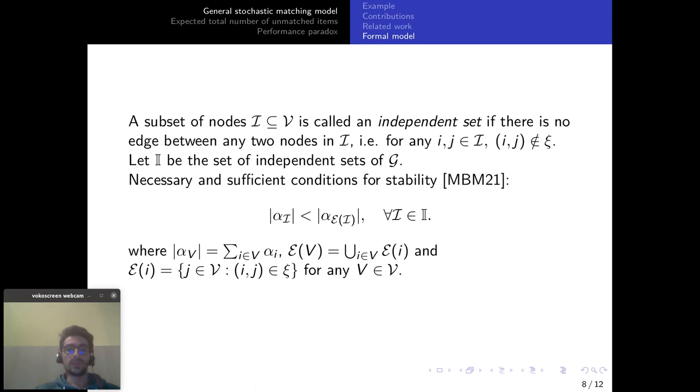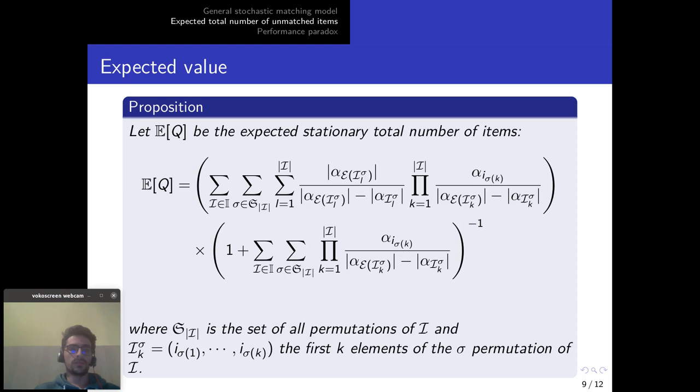So we are now ready to present the first main result which is a closed form formula for the expected stationary total number of items. You don't have to understand in detail this formula. The main takeaway here is that this formula is a finite sum however it's a sum over all independent sets and over all permutations of independent sets. So it can grow quite quickly with the size of the graph.